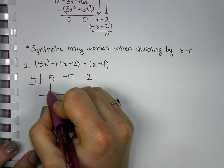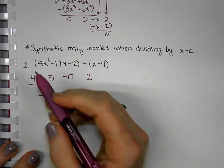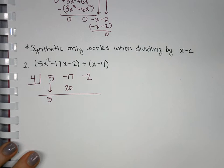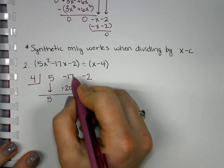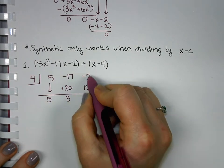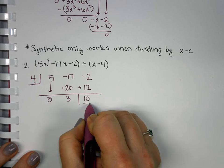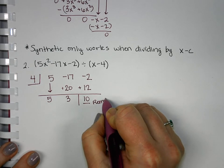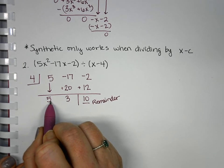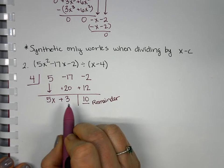Start by bringing down the first number. Then you multiply. 4 times 5 is 20. Then you add. Multiply again. 4 times 3 is 12. Then you add. This number at the end is your remainder. How you write your answer is you go 1 degree less than what you started with. So, we started with x squared. 1 degree less than that is x and that means this is now a constant.